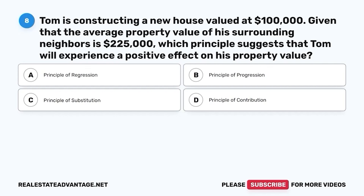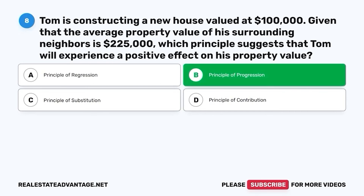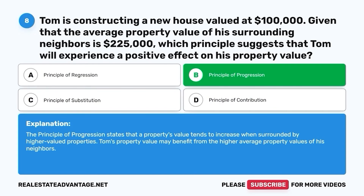Question 8. Tom is constructing a new house valued at $100,000. Given that the average property value of his surrounding neighbors is $225,000, which principle suggests that Tom will experience a positive effect on his property value? A. Principle of Regression. B. Principle of Progression. C. Principle of Substitution. D. Principle of Contribution. The correct answer is B. Principle of Progression. The principle of progression states that a property's value tends to increase when surrounded by higher-valued properties. Tom's property value may benefit from the higher average property values of his neighbors.